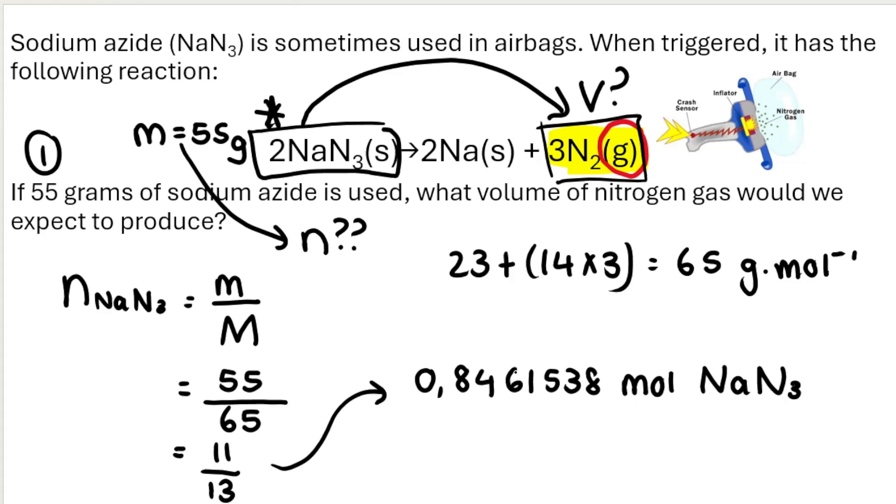The reason I don't round off is because I'm not at the end of the question. Why? What do I need to do? We want the volume of nitrogen gas. So as I said, we need to go from this compound to this compound. We need to use a mole ratio.